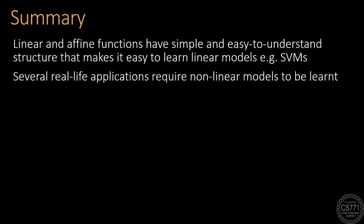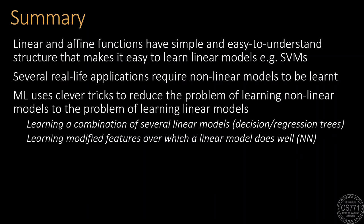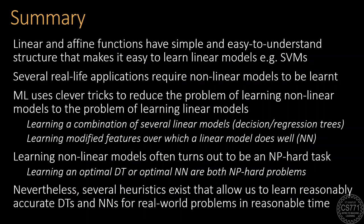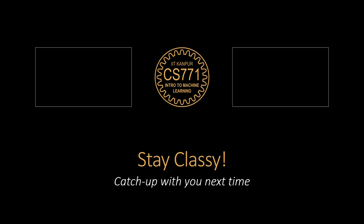In today's discussion, we saw that whereas linear models are easy to understand and learn, real-life applications often require non-linear models. Machine learning uses clever tricks to get the best of both worlds by reducing non-linear problems to linear ones. Decision trees do this by learning several linear models, whereas neural networks do this by jointly learning good feature transformations on top of which linear models do well. Non-linear learning problems are challenging, and learning the optimal decision tree or the optimal neural network is usually an NP-hard problem. Nevertheless, several heuristics exist that allow us to learn reasonably good decision trees or neural networks in reasonable time. Stay classy as ever and see you next time.